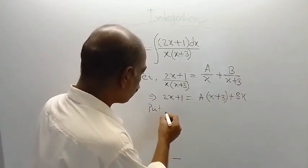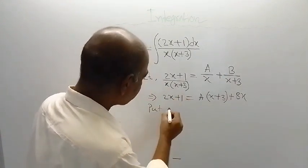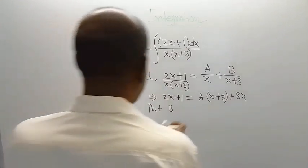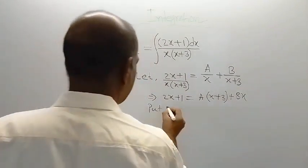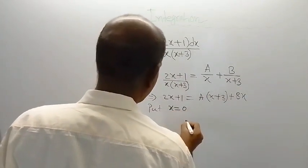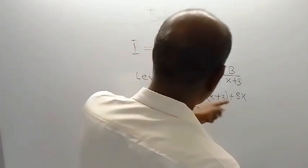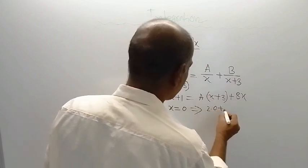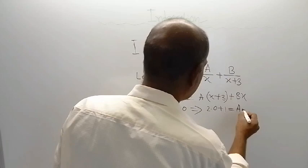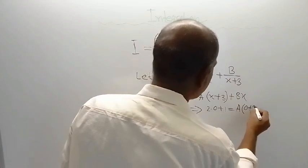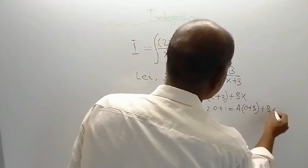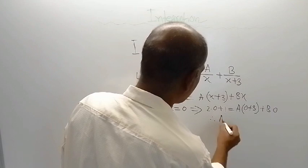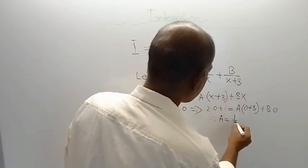First, you put x is equal to 0. If you put x is equal to 0, what you are getting here? In the left-hand side you are getting 2 into 0 plus 1, and in the right-hand side you are getting A into 0 plus 3 plus B into 0. So the result is A is equal to 1 by 3.